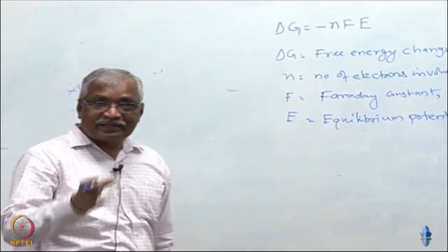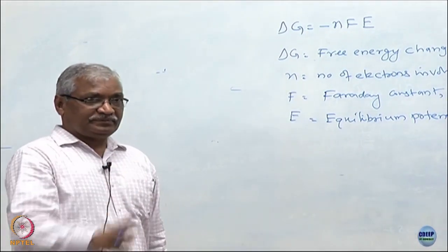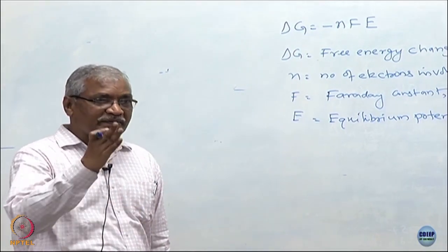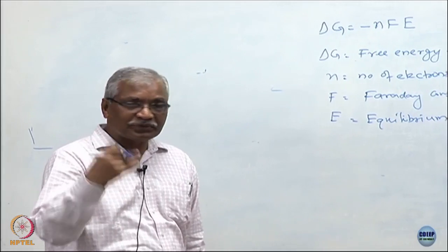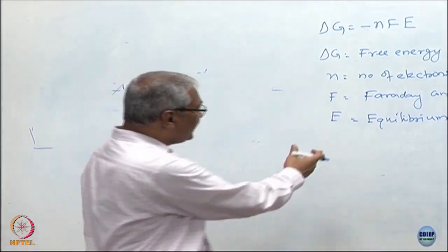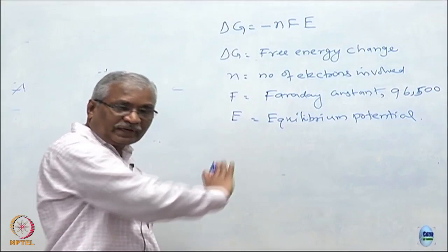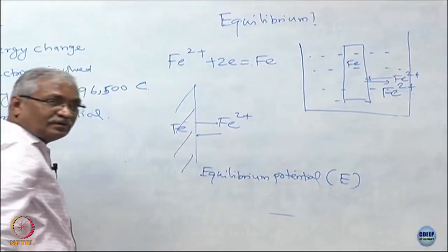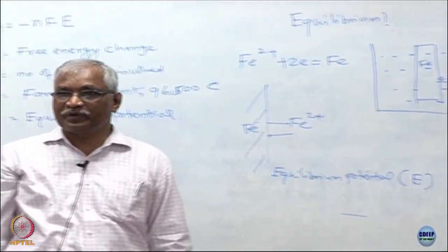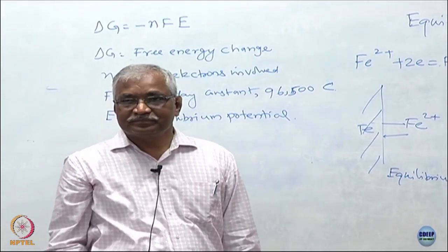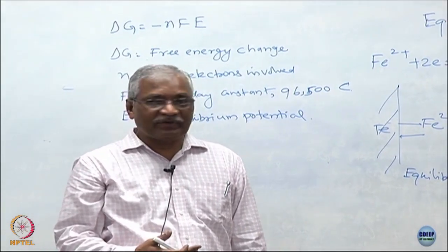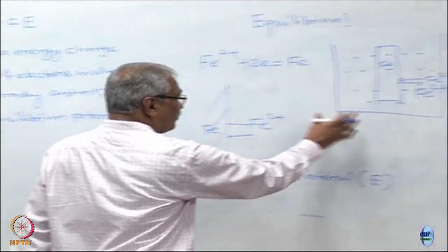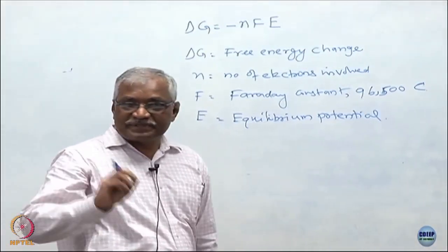Please notice E is written as the equilibrium potential — the potential that defines the equilibrium state. We are not talking about corrosion here. What is corrosion? It is a spontaneous reaction of oxidation and reduction. Over here we are talking about equilibrium. Does iron corrode here? It does not corrode at all — the rate of oxidation of iron equals the rate of reduction of iron, nothing happens. We are only defining the equilibrium state.